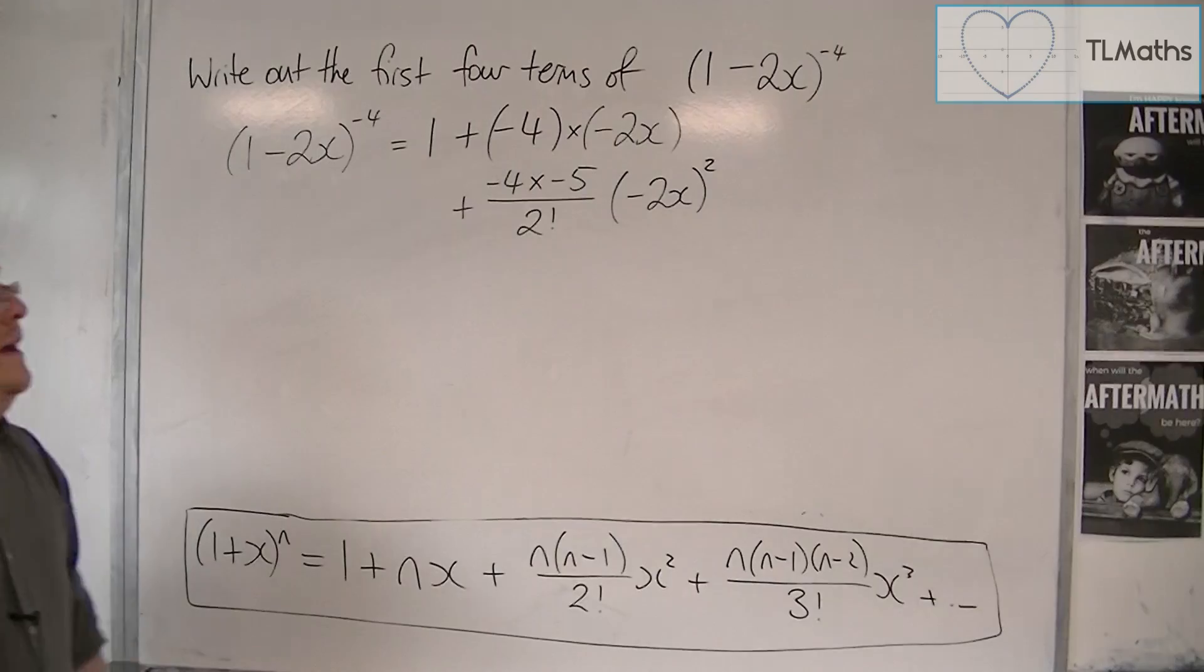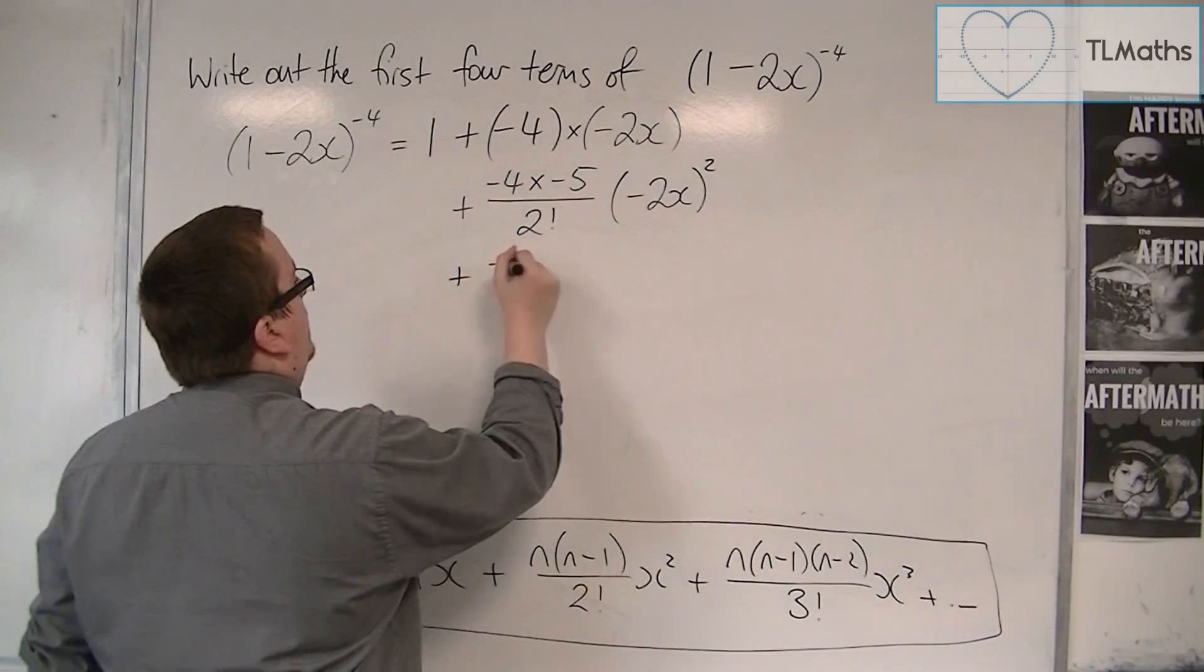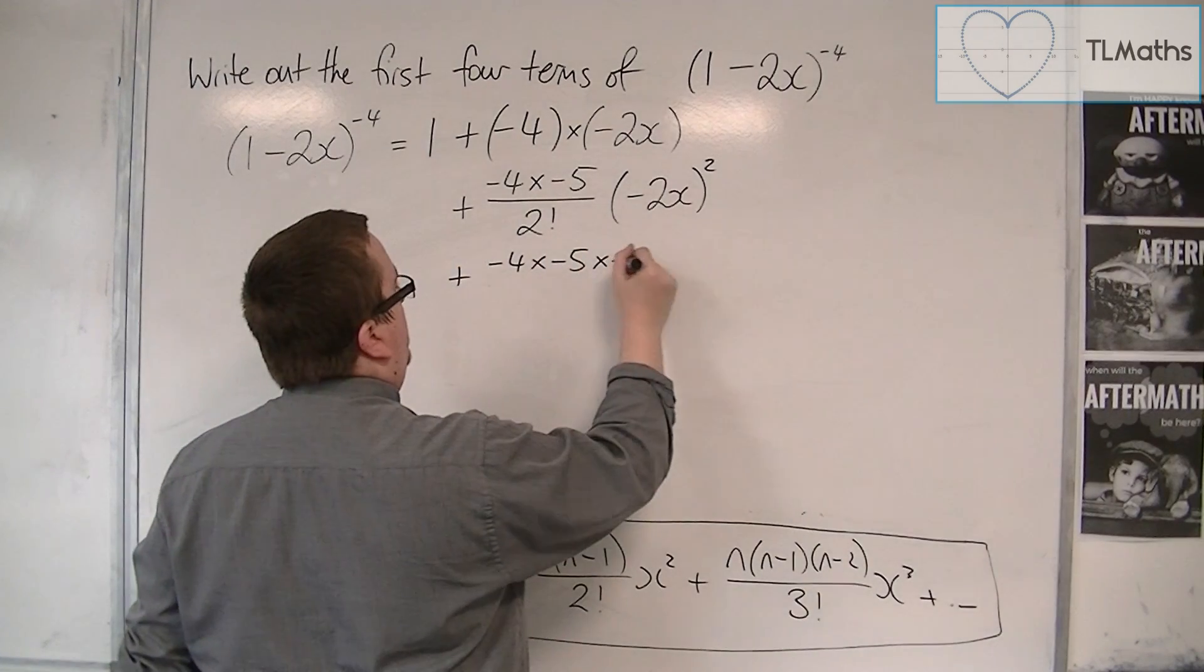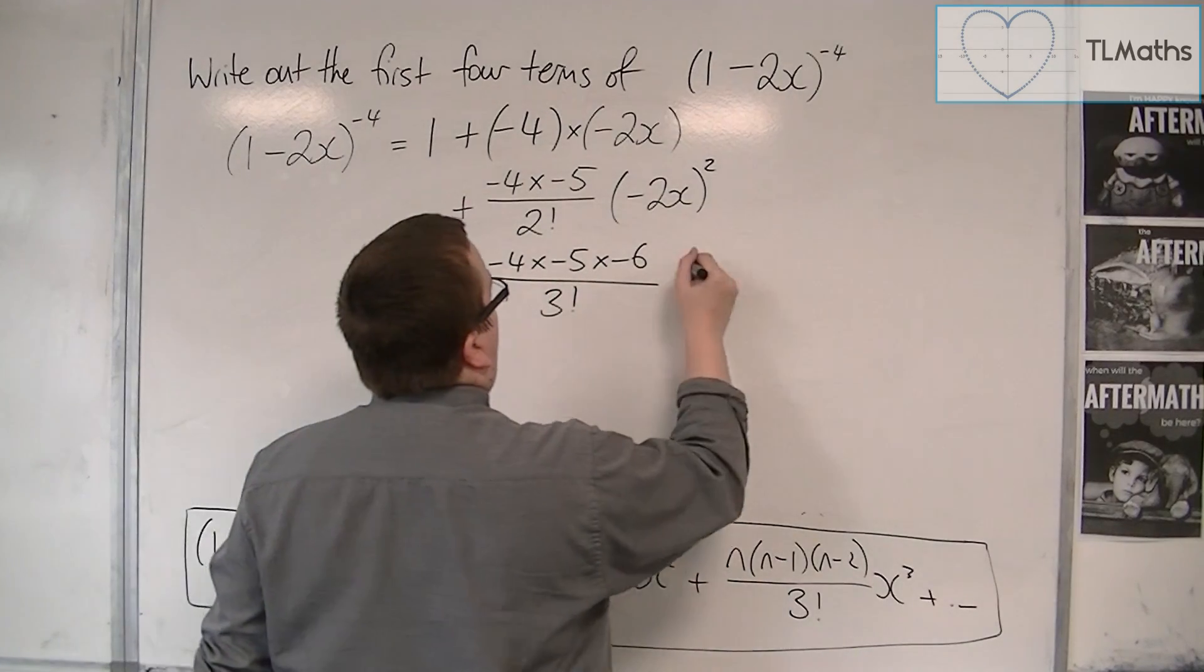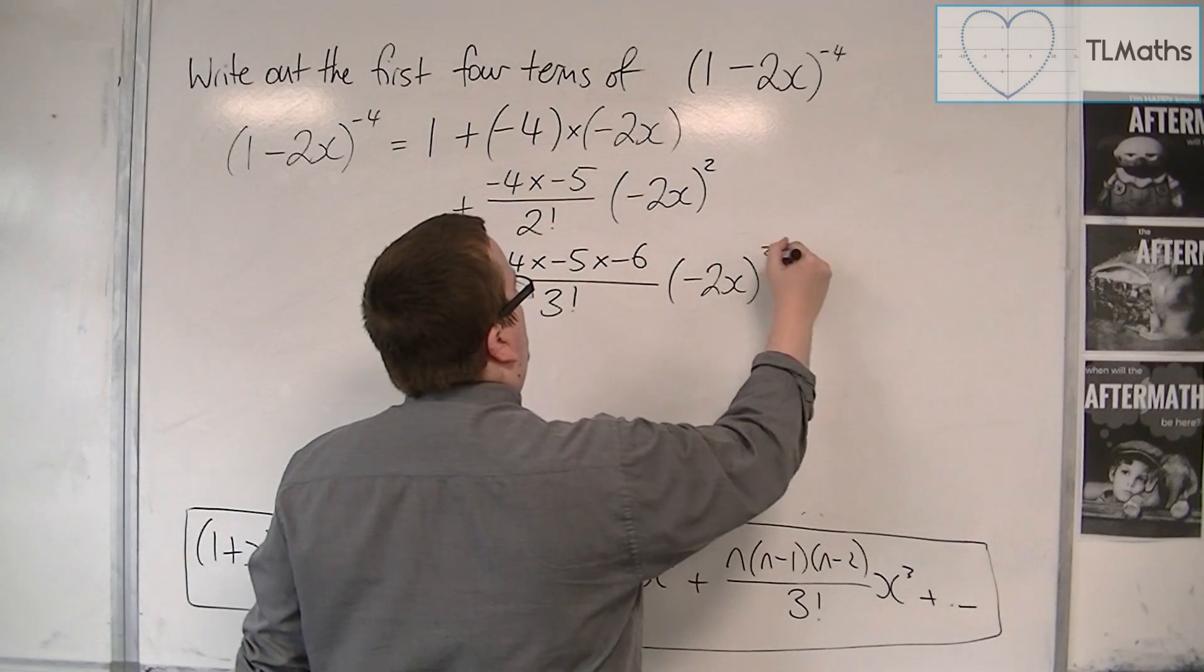so that's (-2x) all squared. Plus n times (n-1) times (n-2) over 3 factorial, which is 6, times x cubed. So that's (-2x) cubed.